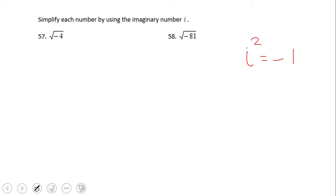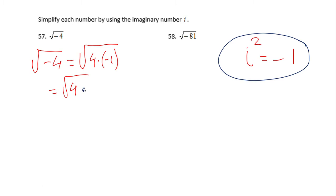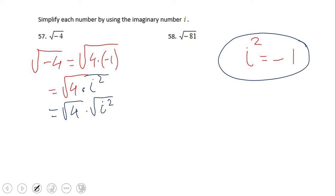For example, the square root of negative four. This can be simplified by rewriting negative four as four times negative one. We can then replace that negative one with i-squared, since i-squared equals negative one. Using the rules of radicals, we break this apart and end up with the square root of four times the square root of i-squared.